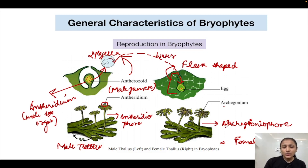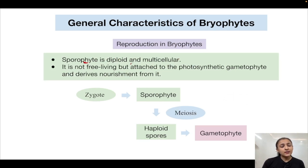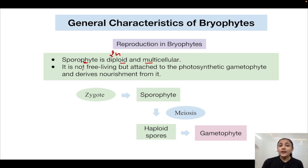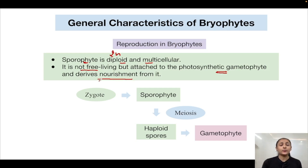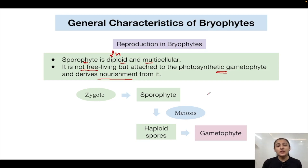The sporophyte in bryophytes is diploid (2n) and multicellular. It is not free-living; it is attached to the photosynthetic gametophyte and derives nourishment from it. The gametophyte can synthesize its own food — that is why it is called the photosynthetic gametophyte. The sporophyte is not independent; it cannot form its own food, so it remains attached to the gametophyte in order to derive nourishment.